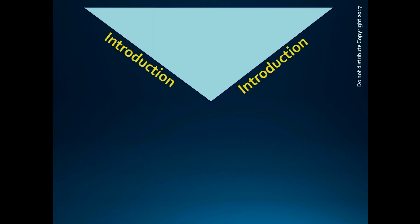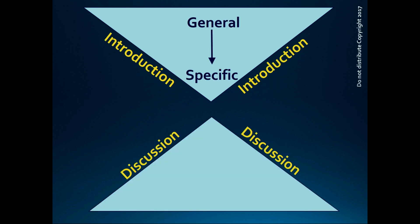I've already described the introduction section of a manuscript as having the shape of an upside-down triangle — it goes from general to specific. The discussion section is just the opposite: it goes from specific to general. Let's take a look at the elements that a discussion section should include.